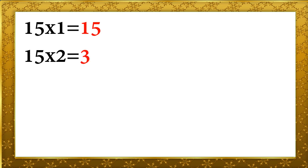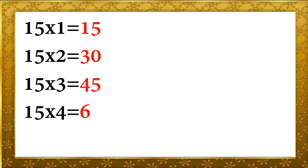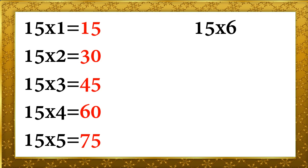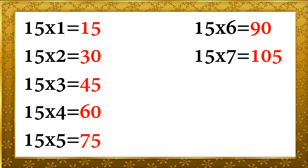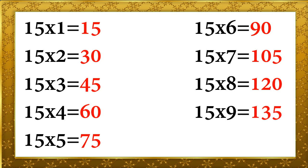Fifteen ones are fifteen, fifteen twos are thirty, fifteen threes are forty-five, fifteen fours are sixty, fifteen fives are seventy-five, fifteen sixes are ninety, fifteen sevens are one hundred five, fifteen eights are one hundred twenty, fifteen nines are one hundred thirty-five, fifteen tens are one hundred fifty.